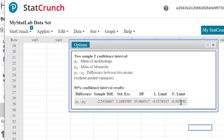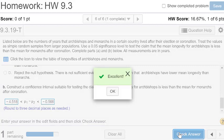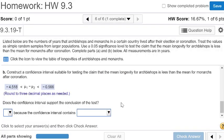Let's find our upper limit. And round off to three decimal places again. We're going to increase 5 by 1 and we're going to get a negative 0.566. Let's check that. Looks good.